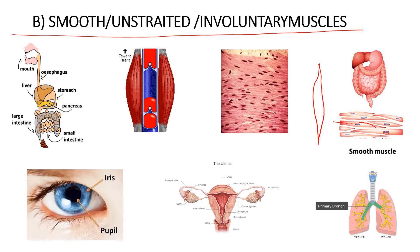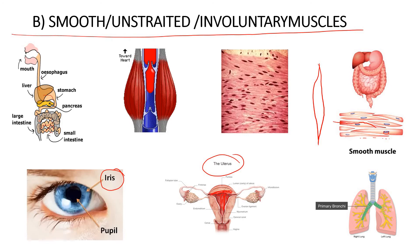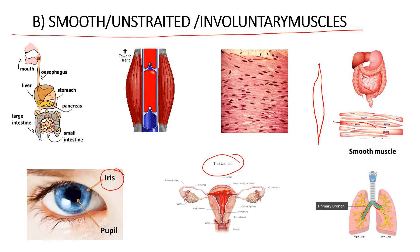Smooth muscles are found in the alimentary canal, where food passes through. They are also found in blood vessels, the iris of the eye, the uterus, and the bronchus in the lungs.